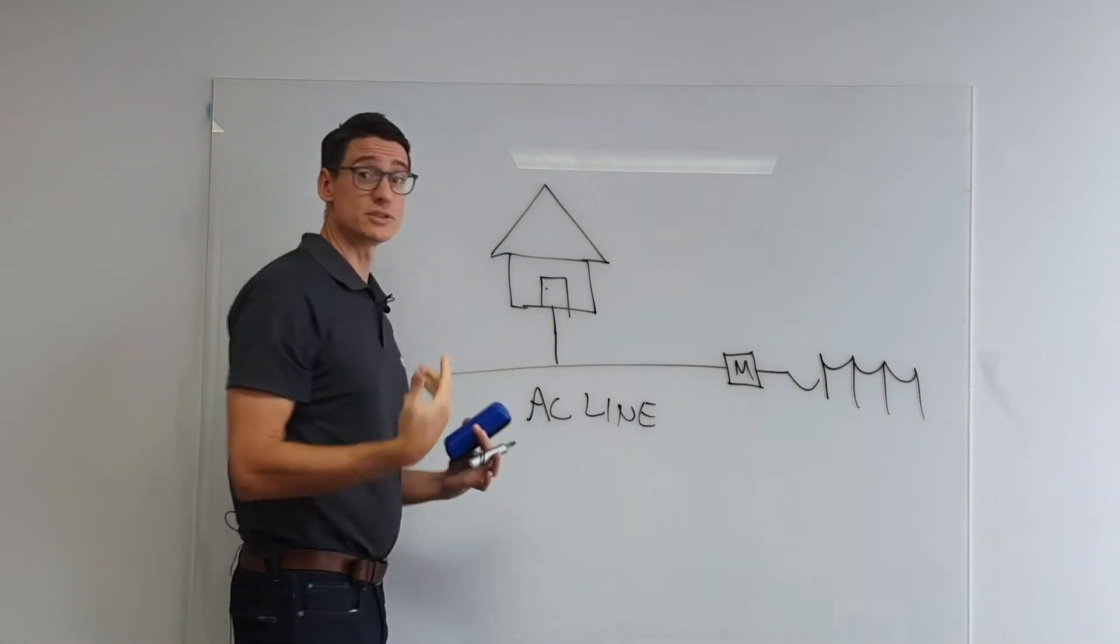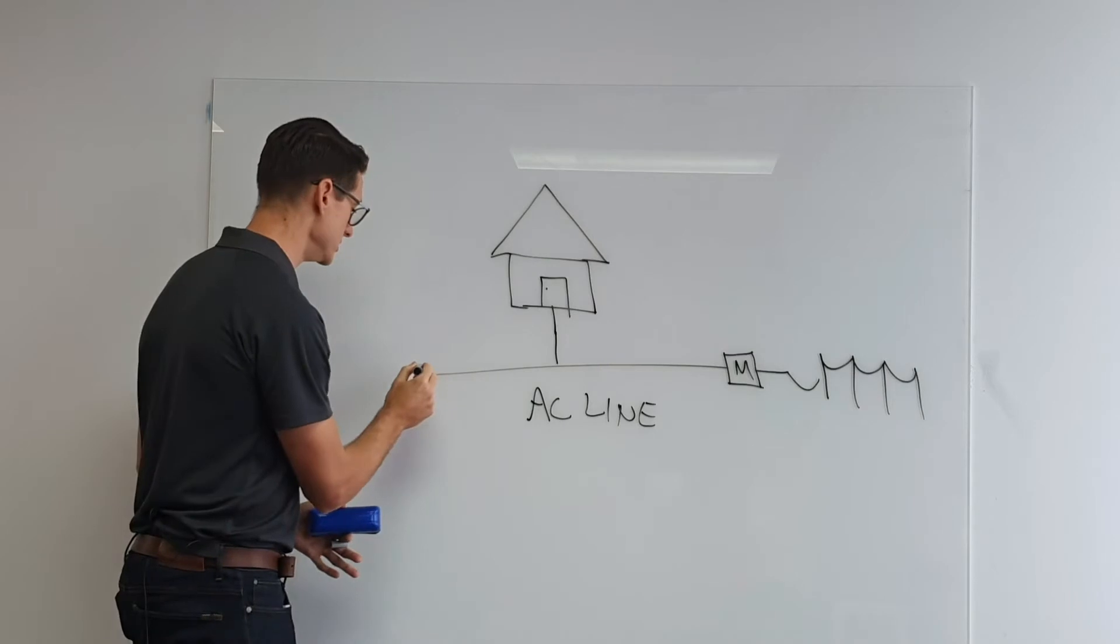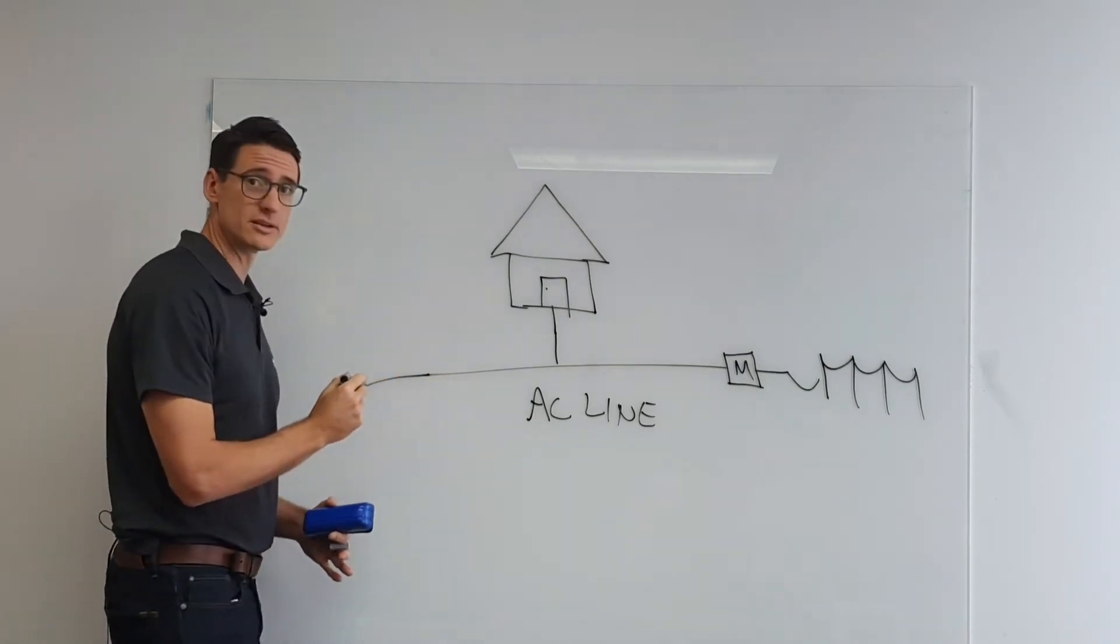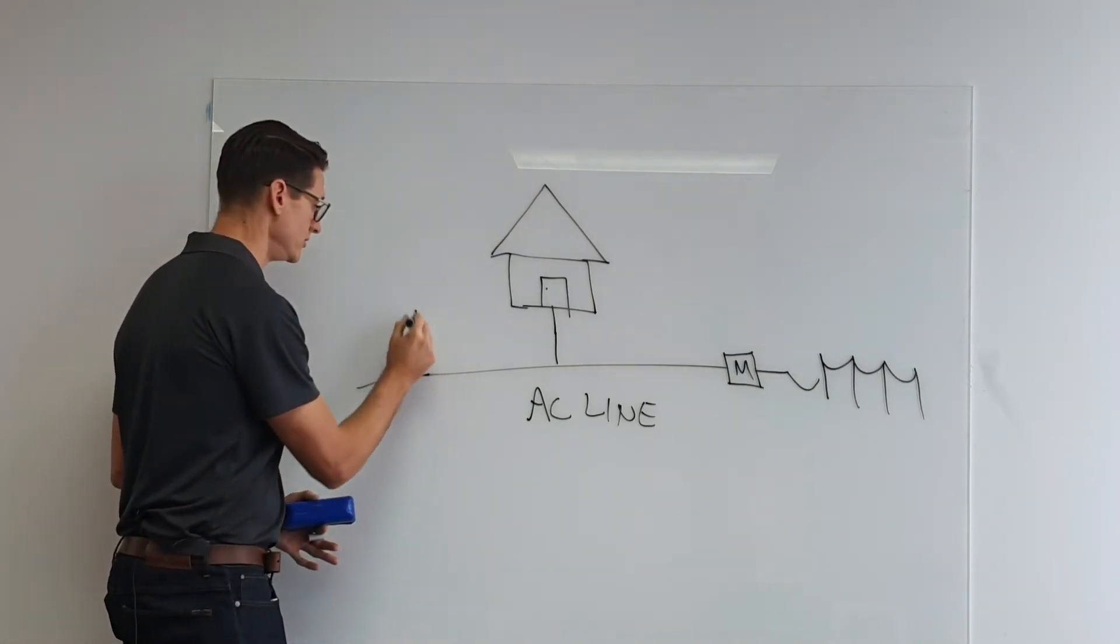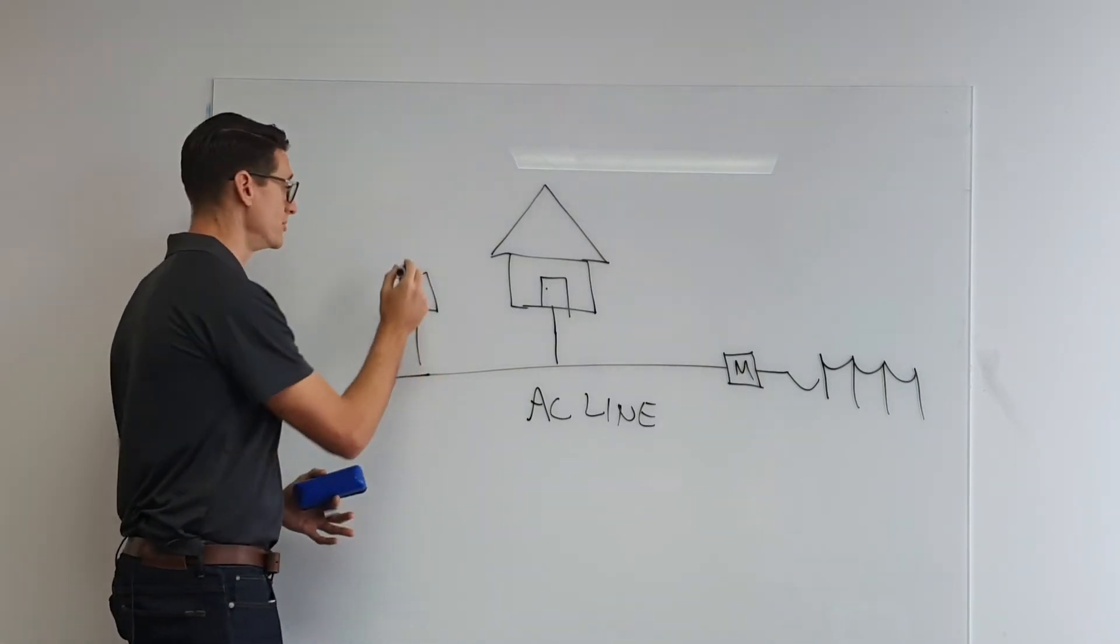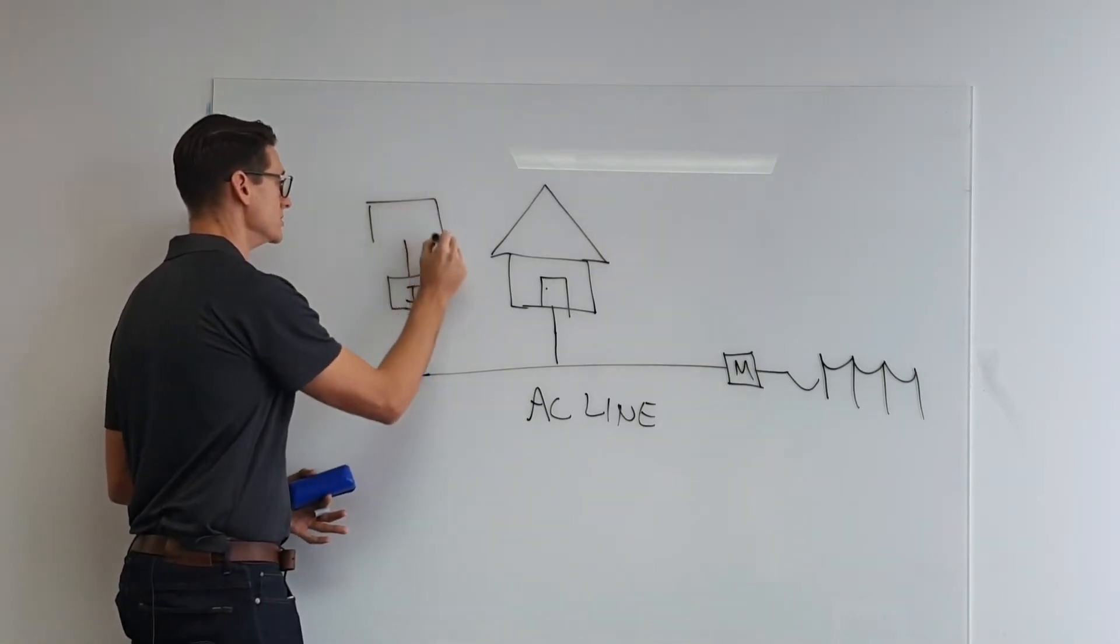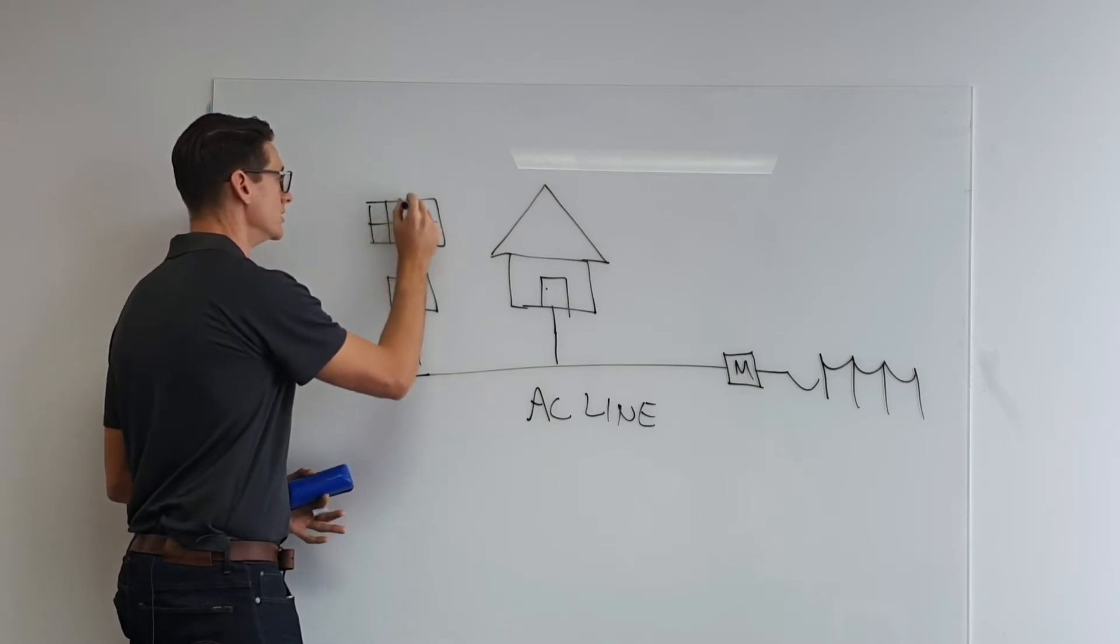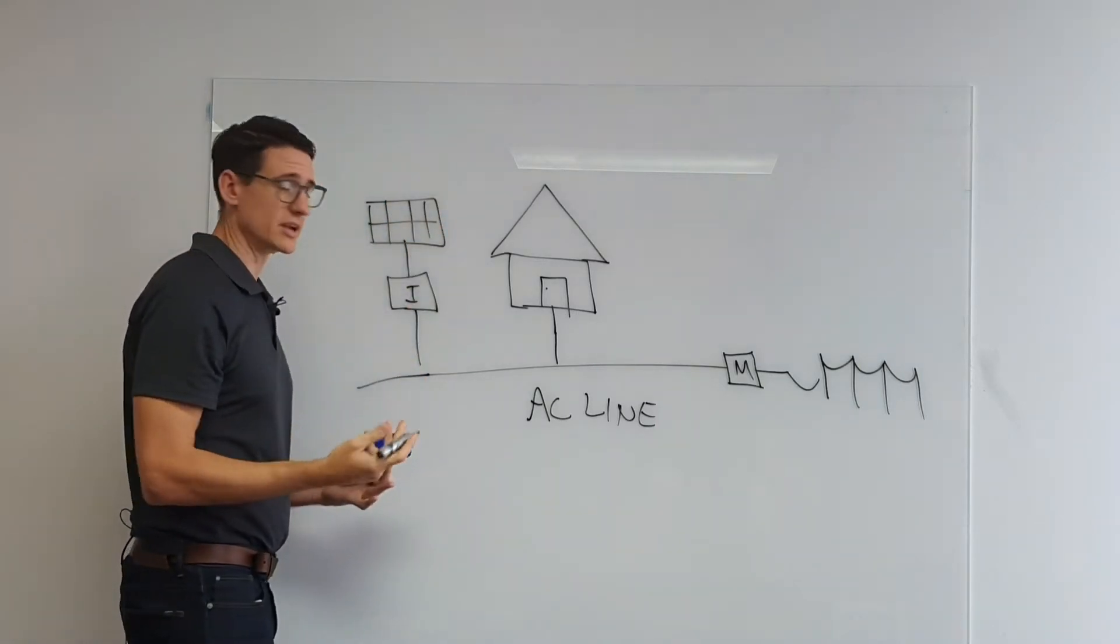So the way a solar system connects is on the AC side. So you have a solar inverter which sits here, and then you have your solar panels which sit above. Your solar panels generate DC power.